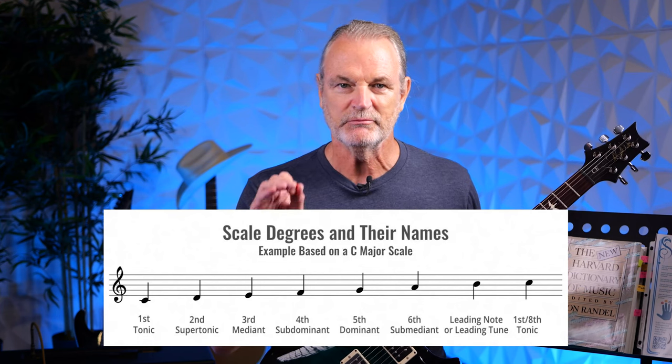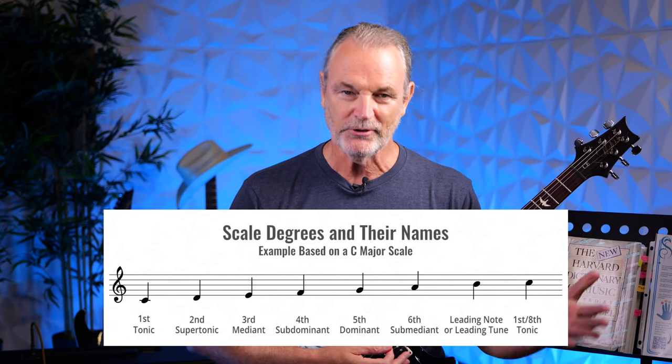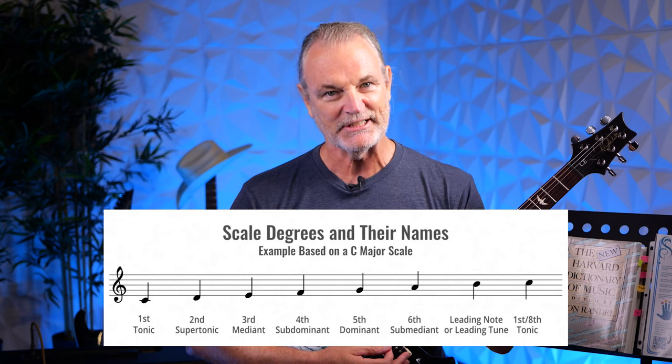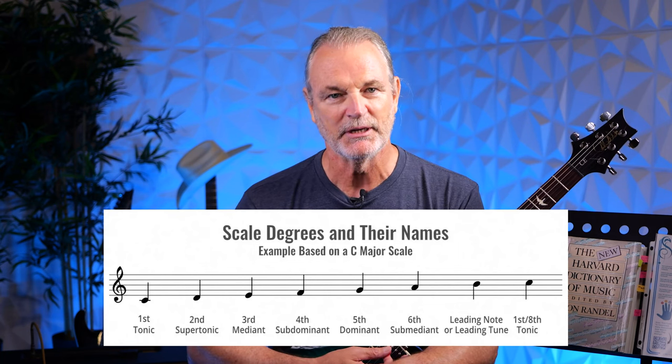The major scale encompasses the tonic, a whole step from the tonic to the second degree, a whole step from the second to the third, a half step from the third to the fourth, a whole step from the fourth to the fifth, a whole step from the fifth to the sixth, a whole step from the sixth to the seventh, and a half step back to the tonic. A scale degree is a reference to being numbered using Roman numerals and named related to the tonic: first degree is Roman numeral I — tonic; second degree, Roman numeral II — supertonic; third degree, Roman numeral III — mediant; fourth degree, Roman numeral IV — subdominant; fifth degree, Roman numeral V — dominant; sixth degree, Roman numeral VI — submediant; and seventh degree, Roman numeral VII — leading tone or subtonic.